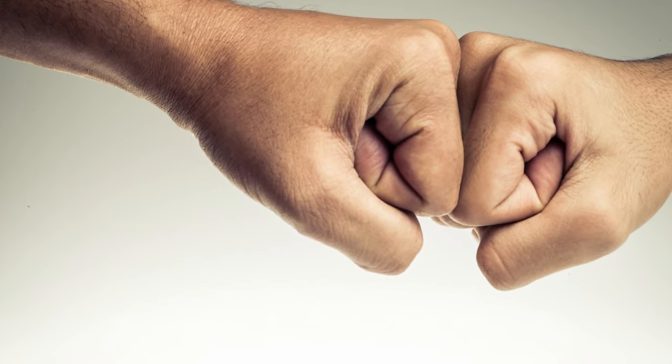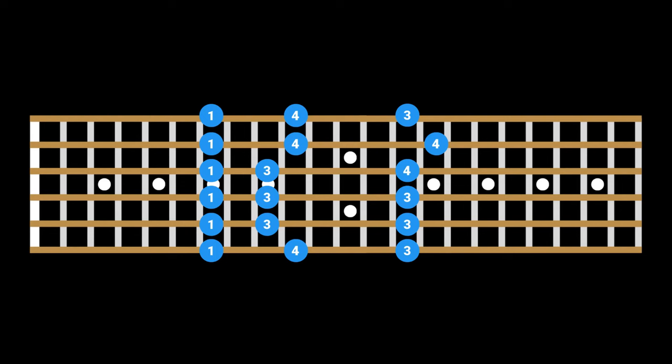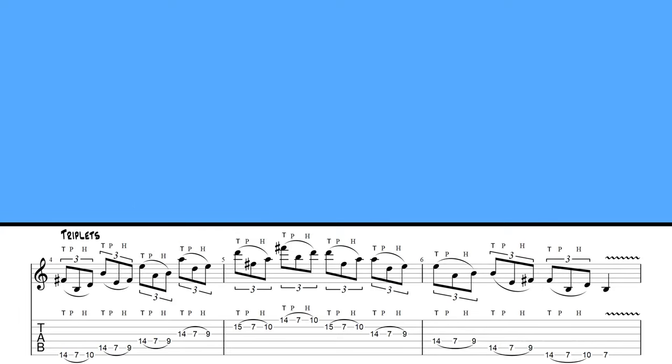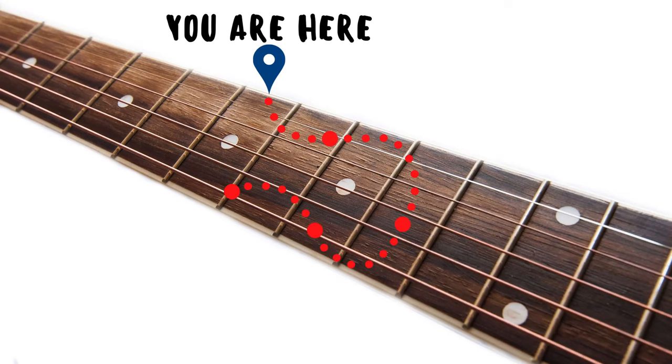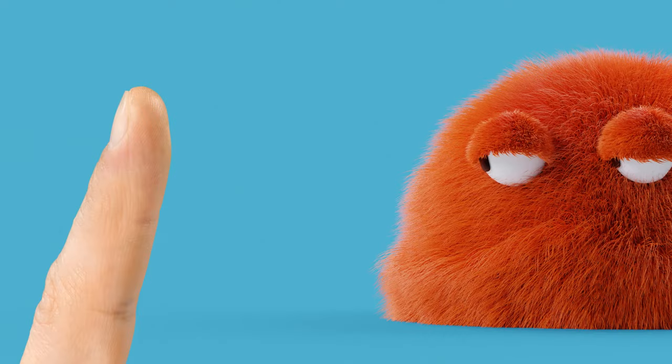After becoming comfortable with the role of each hand and the sequence of notes, you'll need to move on to the next level, which is string skipping. The previous triplet exercise got you used to the role of each hand and playing every note string by string in a sequence. This is great for fretboard navigation and making sure that you understand the roles of both hands, but it's not that inspiring.